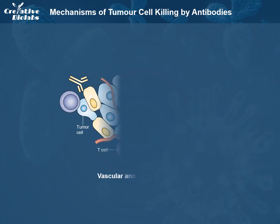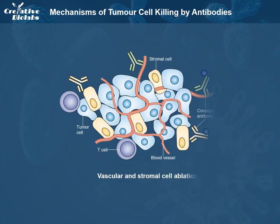Vascular and stromal cell ablation can be induced by vasculature receptor antagonism or ligand trapping, stromal cell inhibition, delivery of a toxin to stromal cells, and delivery of a toxin to the vasculature.